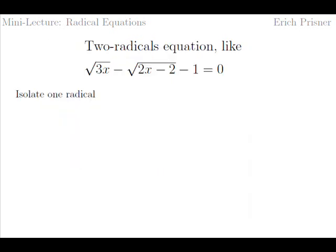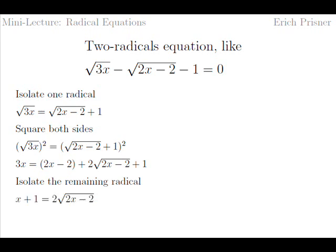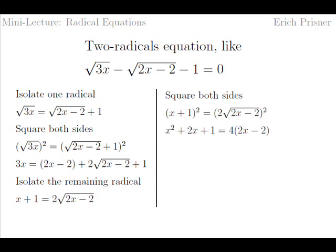Let's isolate the square root of three x. We get square root of three x equals square root of two x minus two plus one. We square both sides, foiling the right, and get three x equals two x minus two plus two times square root of two x minus two plus one. Now we isolate the other radical and get x plus one equals two times square root of two x minus two. We square again, foiling this time on the left, and get x squared plus two x plus one equals four times two x minus two. This gives us a quadratic equation: x squared minus six x plus nine equals zero, which has a double solution x equals three.